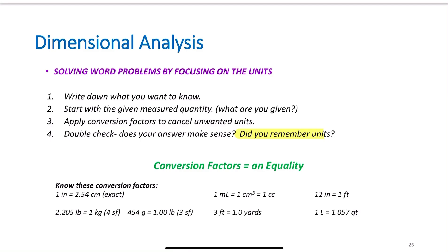So, dimensional analysis - solving word problems by focusing on your units. You're going to follow this pattern. First, write down what you want to know. We're going to do two quick examples at the end of this module and then work more in class. Write down what you're trying to find. Are you trying to find the mass? The volume? The number of something? Then write down the given measured quantity. There has to be some measurement provided in the question. You need to start with the value. Apply conversion factors to cancel unwanted units and double check - does your answer make sense? Did you remember your units? I cannot highlight this enough. Units are vital. If I tell you I'm giving you 20, am I giving you $20 or 20 homework assignments? I know you much prefer the $20.